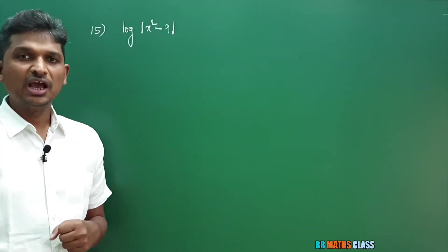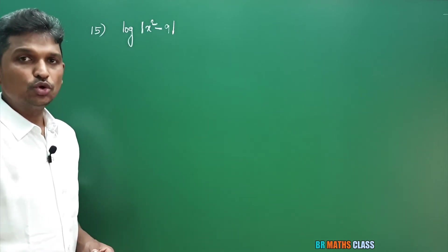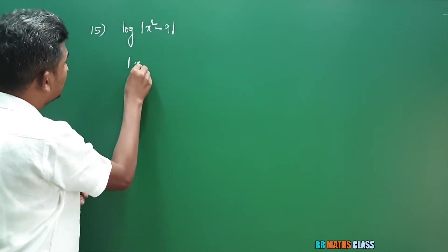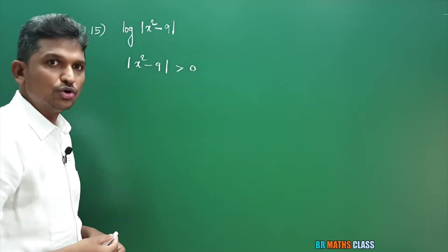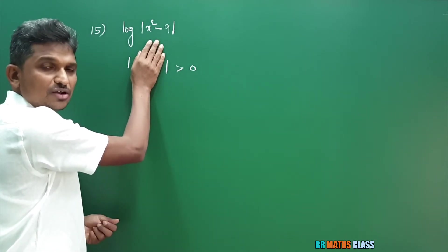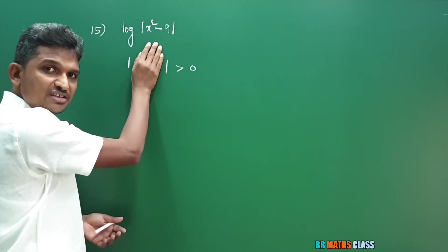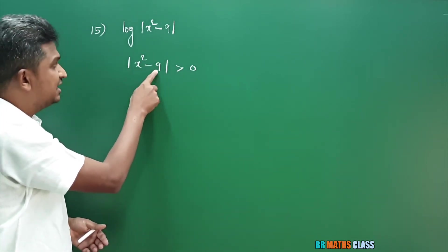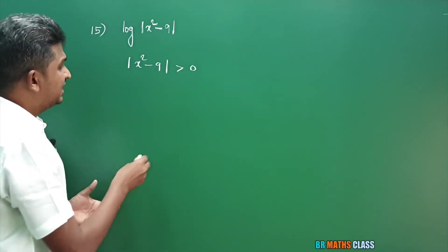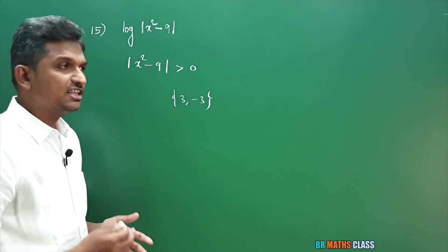Observe question number 15. We want to find the domain of logarithm of modulus of (x²-9). Logarithm is defined only for positive real numbers, so modulus of (x²-9) must be greater than 0. Modulus always gives positive values, but it can be 0. When x = 3, we get 9-9 = 0. When x = -3, it also becomes 0. So when x = 3 or x = -3, this inequality fails.